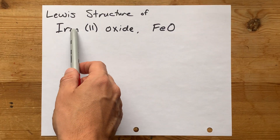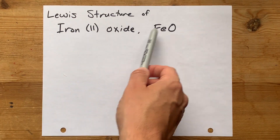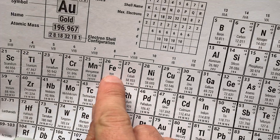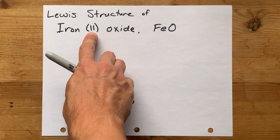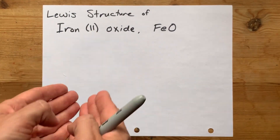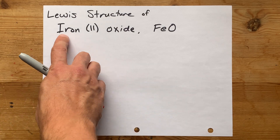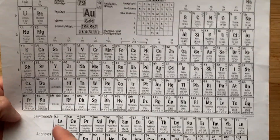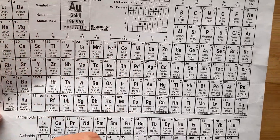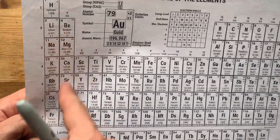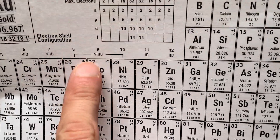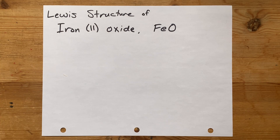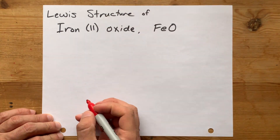We're going to draw the Lewis structure for iron 2 oxide, which has the formula FeO. Step one is to agree that iron, the metal, will have two electrons in its outer shell to start with. We're basing this off of the charge on that atom. Often from the periodic table, you can tell how many valence electrons there will be based on the identity of the atom, but iron can have multiple different charges, so you'll have to be informed by the charge it has in the molecule you're asked for.